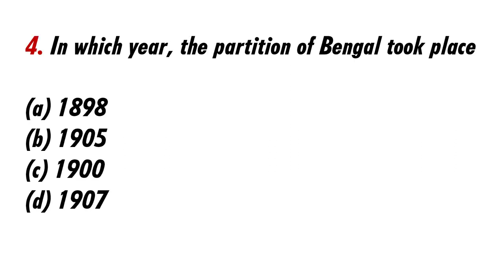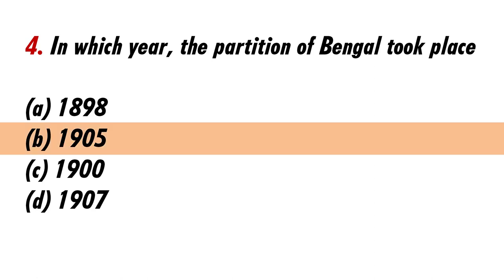In which year did the partition of Bengal take place? Answer B: 1905.